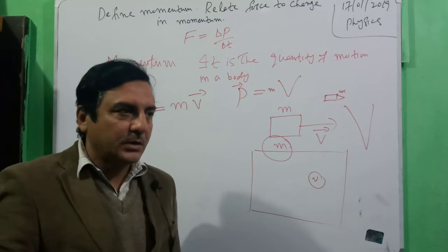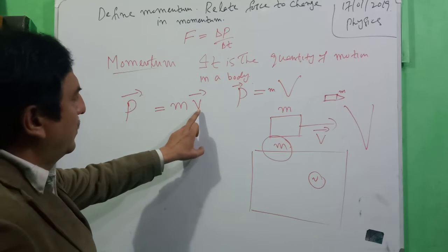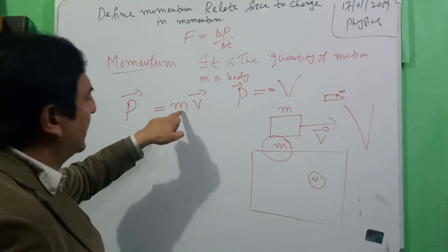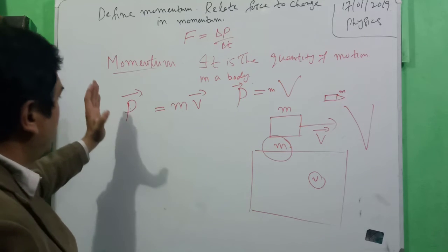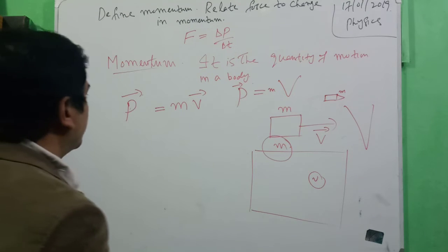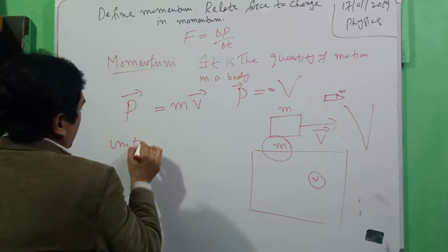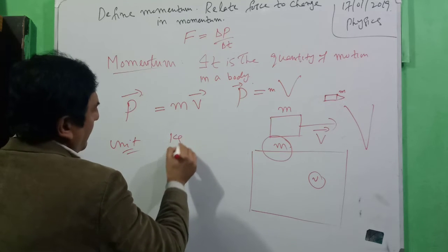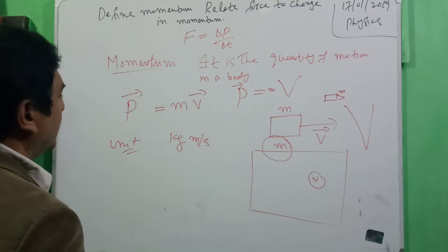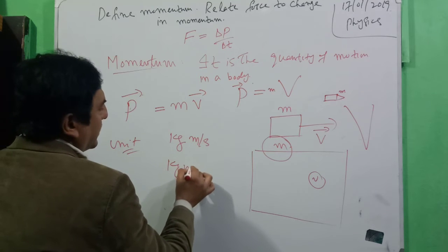Momentum is a physical quantity and it is a vector quantity, because velocity is a vector. When a vector is multiplied by a scalar — mass is a scalar — the obtained quantity is also a vector. The unit of momentum: mass is kilogram and velocity is meter per second, so the unit of momentum is kilogram meter per second.